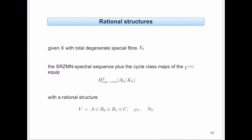What is the relation to the previous setup? If you have a variety with totally degenerate special fiber — simple normal crossing, with all components and their intersections satisfying the cohomological definition — then the Steenbrink-Rapoport-Zink-Mokra-Nakajima spectral sequence plus cycle class maps equip the second crystalline cohomology with a rational structure. This is a straightforward exercise; the geometry of the special fiber is supposed to be very simple.